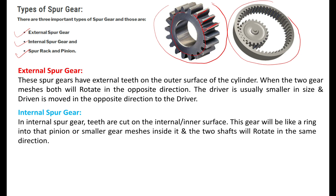The second type is internal spur gear. In internal spur gear, teeth are cut on the internal or inner surface. This gear is like a ring, into which a pinion or smaller gear meshes inside. The two shafts rotate in the same direction — if the inner gear shaft moves clockwise, the outer gear moves in the same direction.